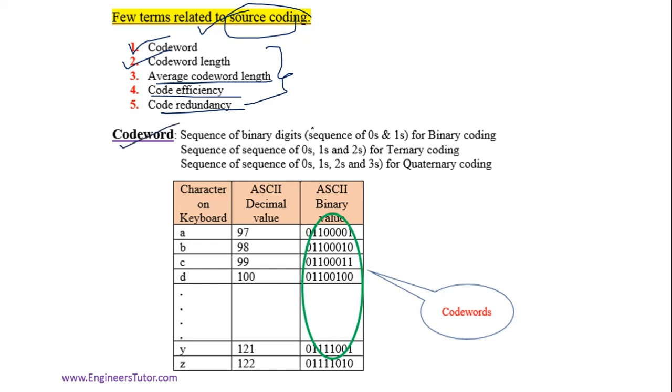A codeword is a sequence of digits. In binary coding, we represent codewords in zeros and ones. In ternary coding, we use zeros, ones, and twos. In quaternary coding, we use four digits. Quaternary means 4, ternary means 3, binary means 2.